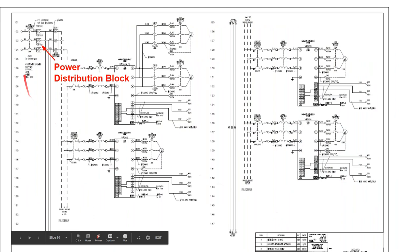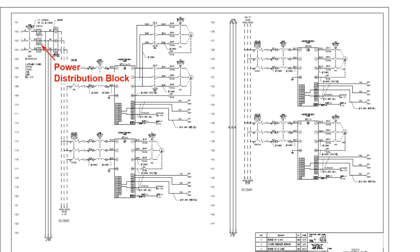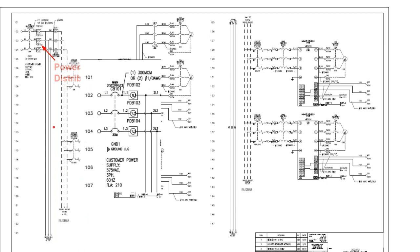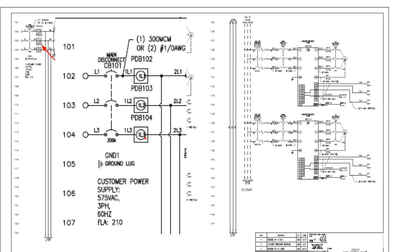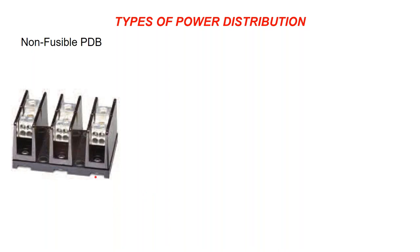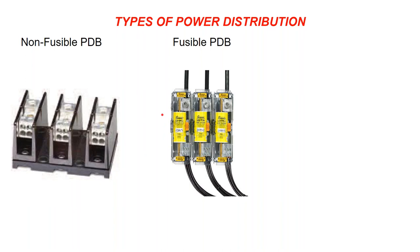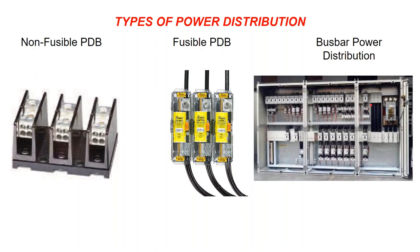After the disconnect, we have power and now need to distribute it using a power distribution block. Looking at the blown-up diagram, you can see the disconnect, the power distribution block, and different types of power distribution. Typically you'll see a block with a single conductor coming in and multiple conductors going out. Increasingly, fuses are being incorporated within the power distribution block itself to achieve the required short circuit current ratings.